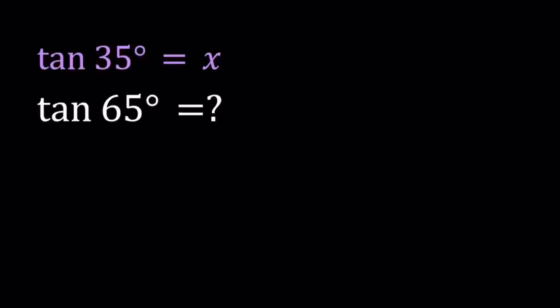Hello everyone. In this video, we're going to be dealing with a trigonometric value. We're given that tangent 35 degrees equals x, and we are supposed to find tangent 65 degrees in terms of x, even though the question doesn't explicitly state that. That's what is meant by this.